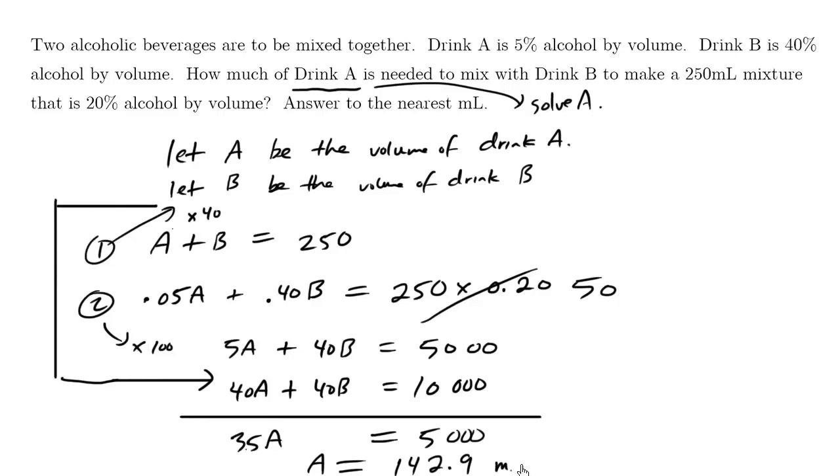We're talking about milliliters. So rounding to the nearest milliliter, we have approximately, we need to throw in 143 milliliters of drink A into the cup so that we generate a 250 milliliters mixture that's 20% alcohol by volume.